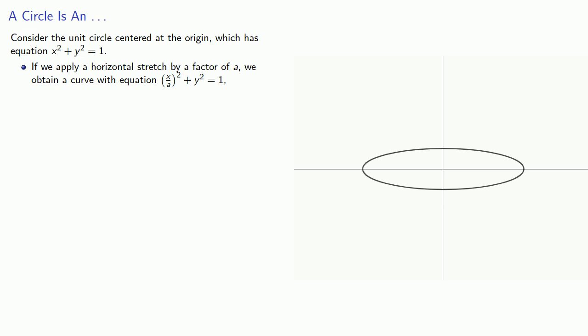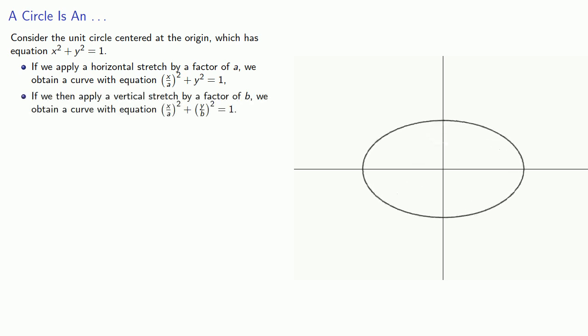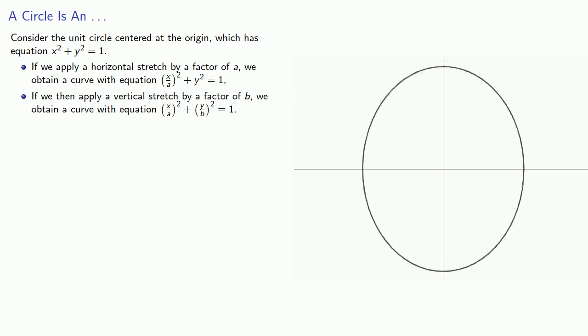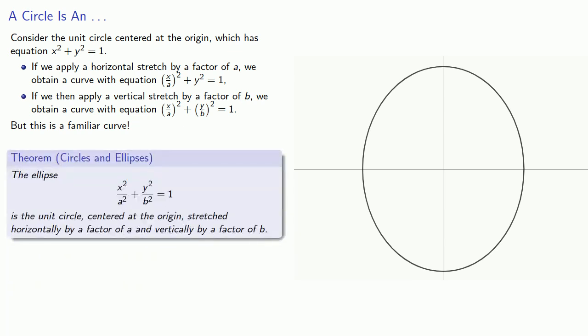If we then apply a vertical stretch by a factor of b, we obtain a curve with equation x divided by a, squared, plus y divided by b, squared, equals 1. But this is the equation for a familiar curve, and so we have this connection between circles and ellipses.